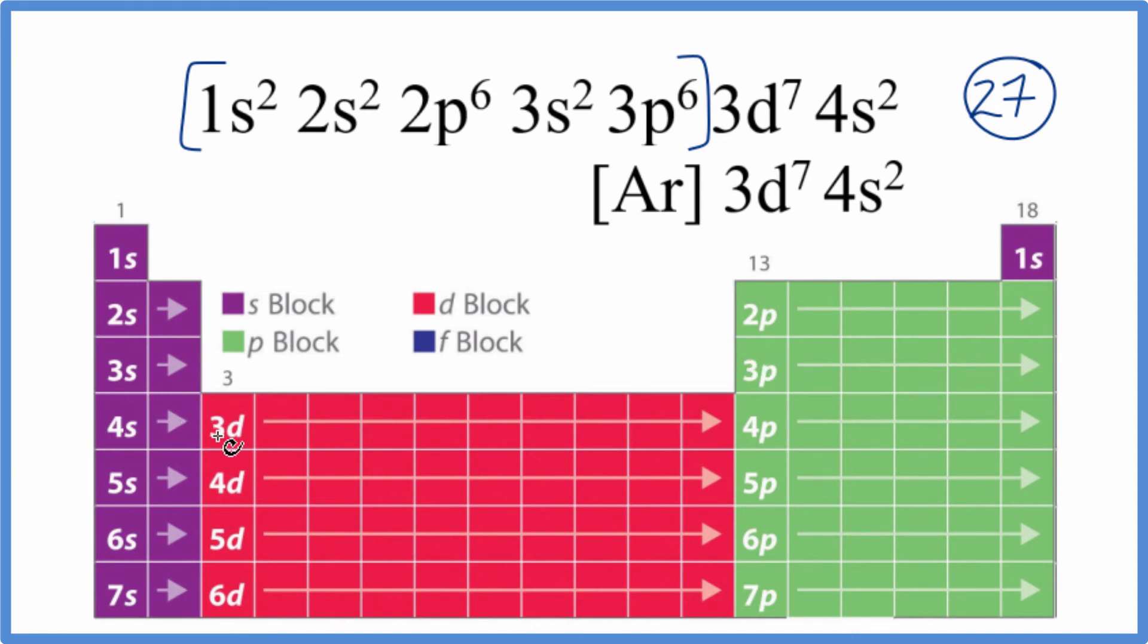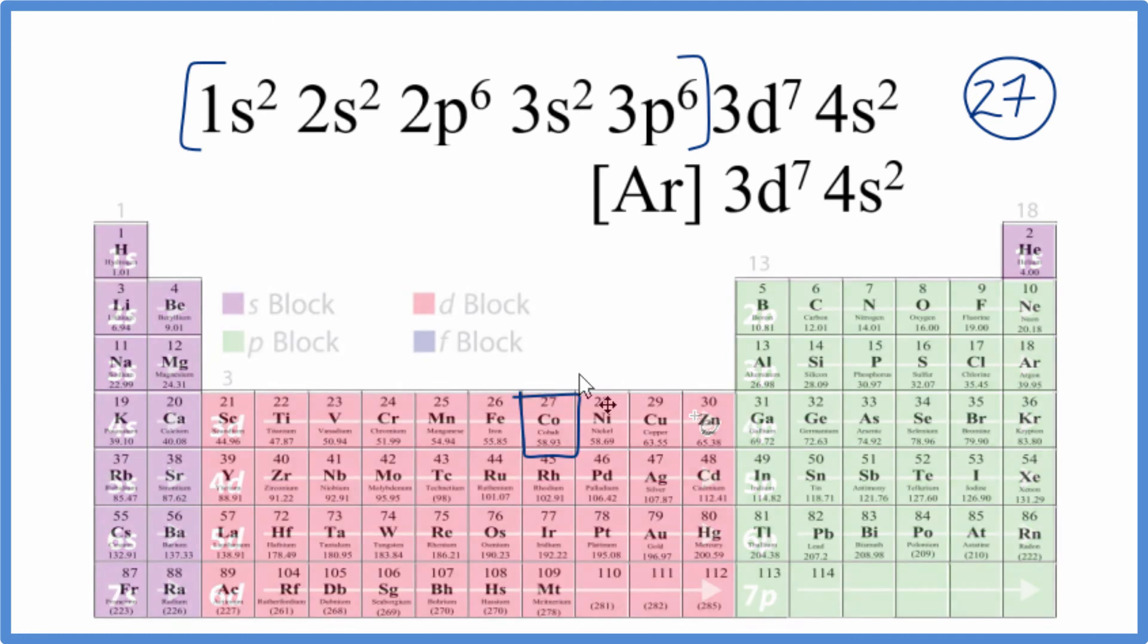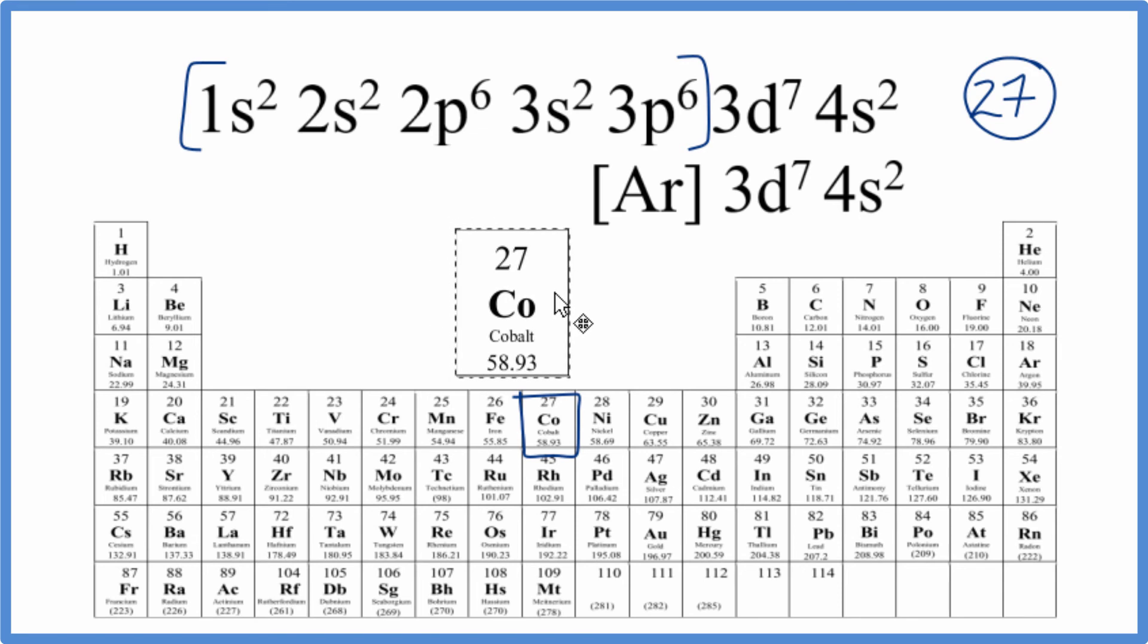Then we have 4s2 followed by 3d, and we're looking for 3d7. So we go 1, 2, 3, 4, 5, 6, 7. Here's this 3d7. And if we go back, we see cobalt. And this is just like we found before when we added up all of these electrons.